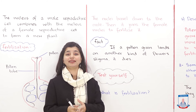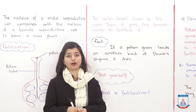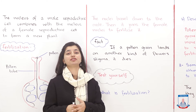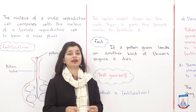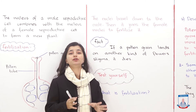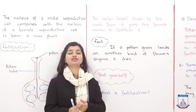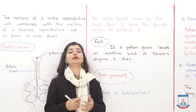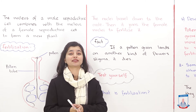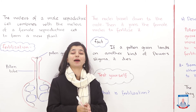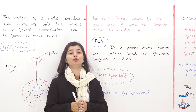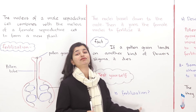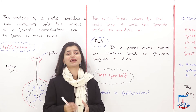After understanding what fertilization is, we will now answer the questions in the test-yourself box in your textbook, to check how much we have understood. The first question is: what is fertilization? Fertilization is the process in which the male reproductive cell combines with the female reproductive cell to form a new plant. You can phrase it as: fertilization is the process in which a male reproductive cell combines with a female reproductive cell to give birth to a new offspring or new plant. There is also a definition in the book which we discussed at the start of the lecture.